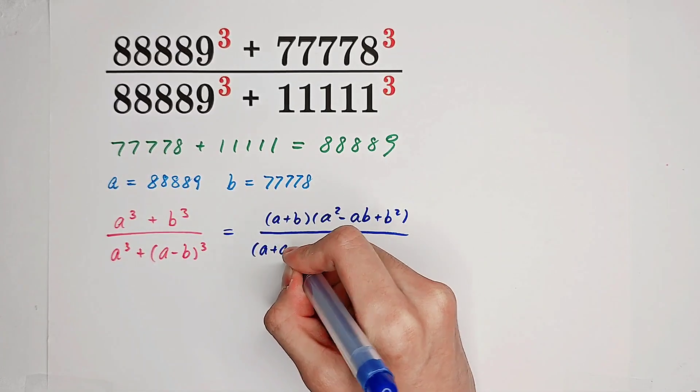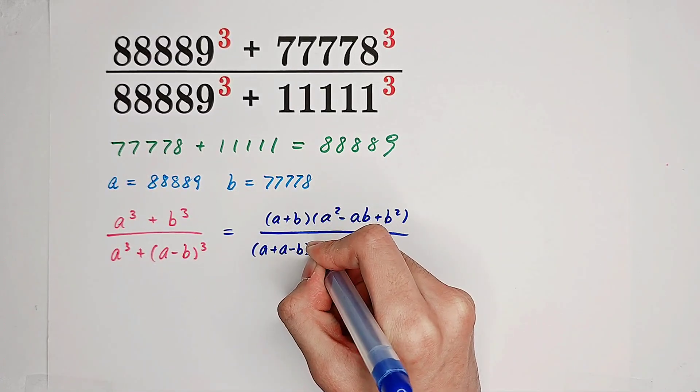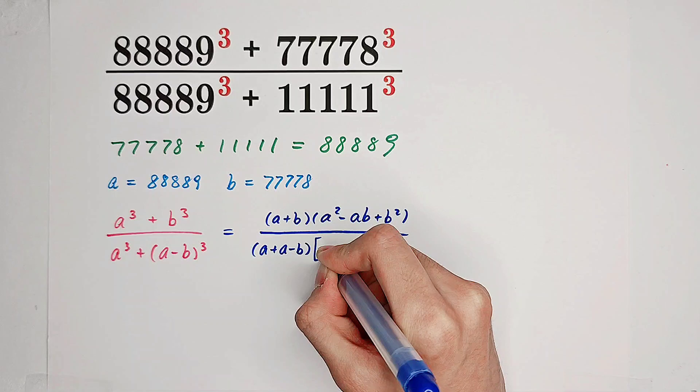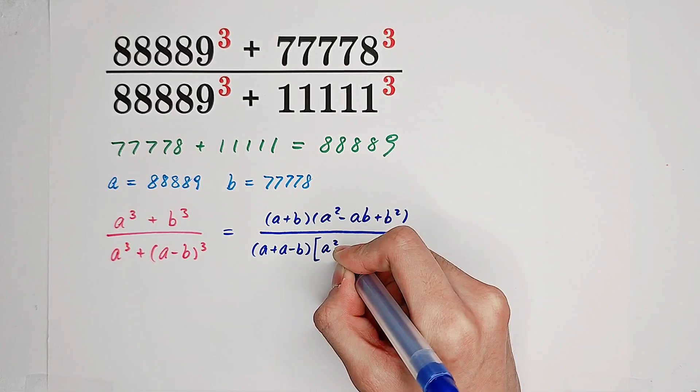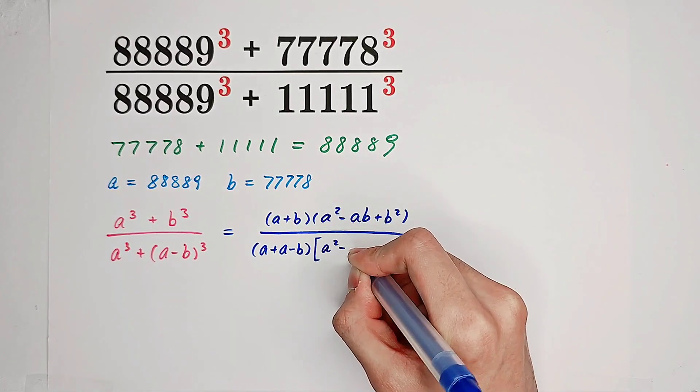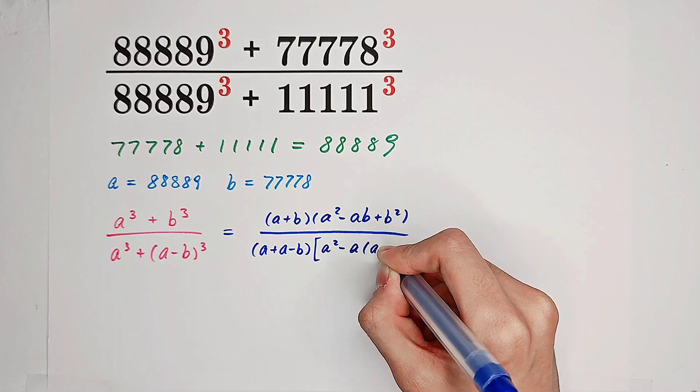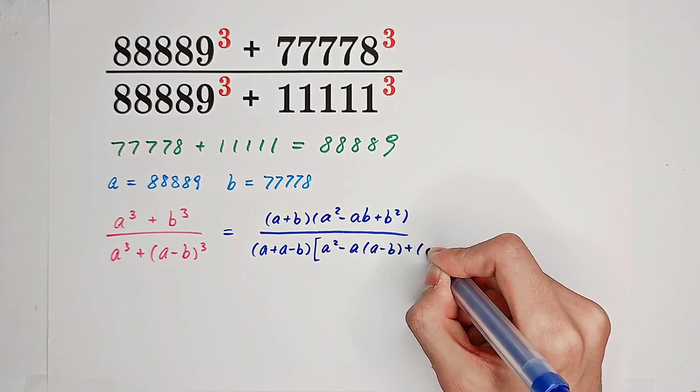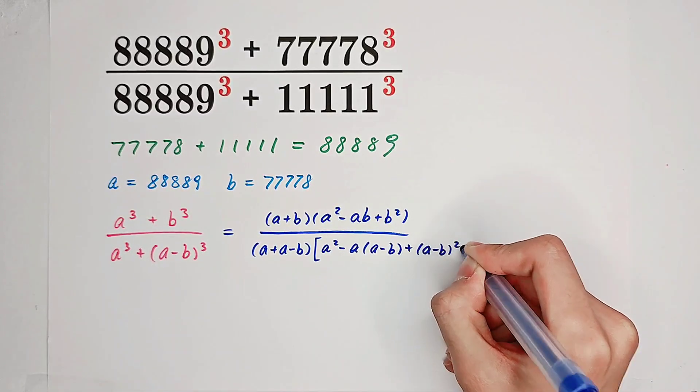That is A plus A minus B times A squared minus A times A minus B plus A minus B squared.